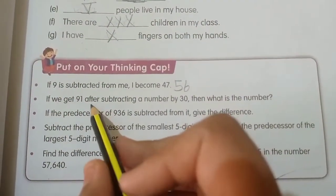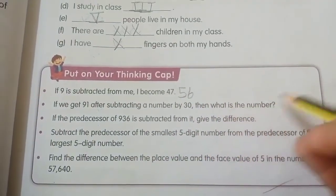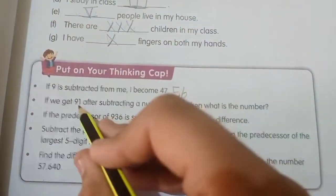If we get 91 after subtracting a number by 30, then what is the number? 91 plus 30 equals 121.